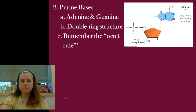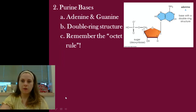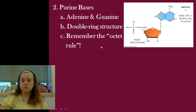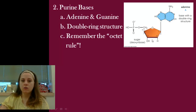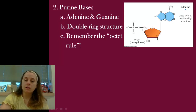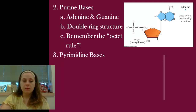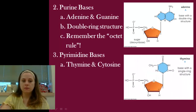Purines have a double ring structure. All of these molecules are bonded covalently, creating a very strong bond with all of the pieces of our nucleotide. It's what actually holds the double strand together that's held together by hydrogen bonds. For pyrimidines — thymine and cytosine — remembering the 'y' in pyrimidine will help you remember which ones they are.